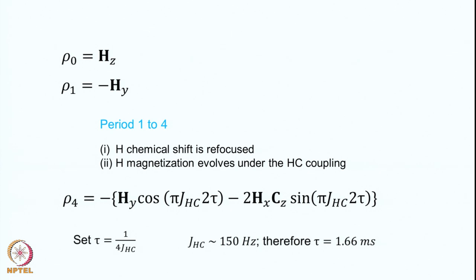During the period from time points 1 to 4, this is the spin echo. Two things happen: first, the proton chemical shift is completely refocused because the 90x–tau–180x–tau sequence produces the spin echo, so at time point 4 the proton chemical shift is refocused. However, the proton magnetization evolves under the proton-carbon coupling — this Hamiltonian is operative and is not refocused in the spin echo experiment when the 180 pulse is applied on both channels.